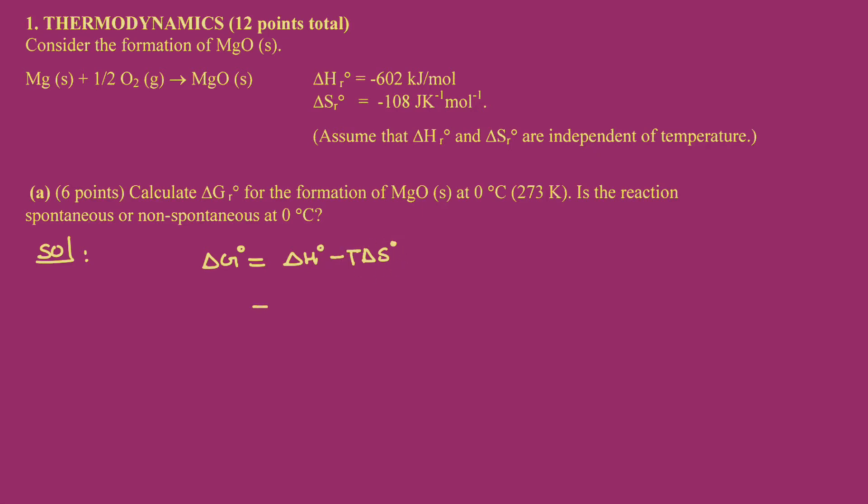Now, the value of ΔH is given, that is minus 602 kilojoule per mole, minus temperature is 273, into entropy change is minus 108 Joule per Kelvin per mole. So you have to convert this into kilojoule, so I have to simply divide it by 1000. So basically, we will be getting minus 602 plus 273 into 108 divided by 1000.